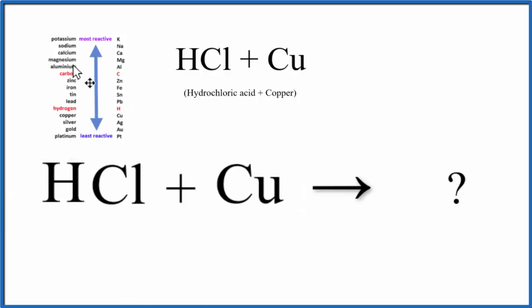When we look on the activity series, the least reactive are at the bottom, and the most reactive are at the top. If copper were more reactive, it could push the H out and bond with the chlorine.